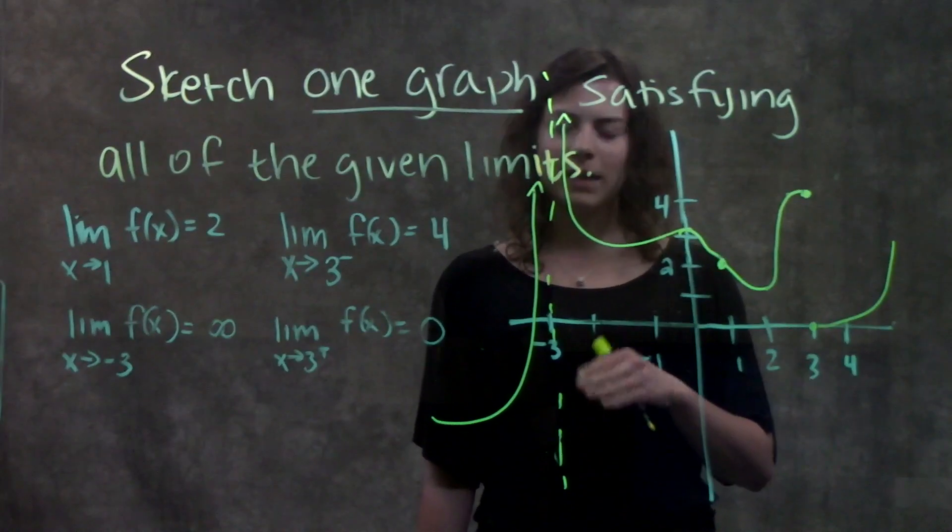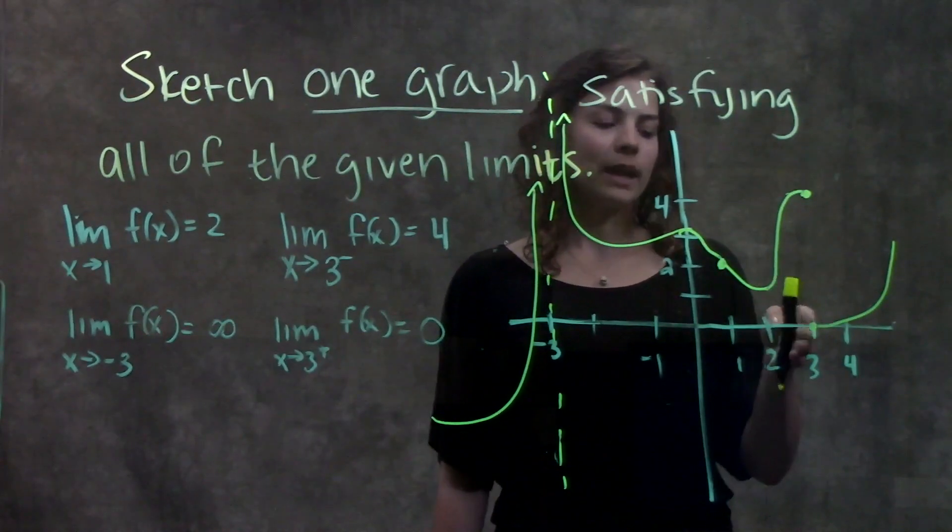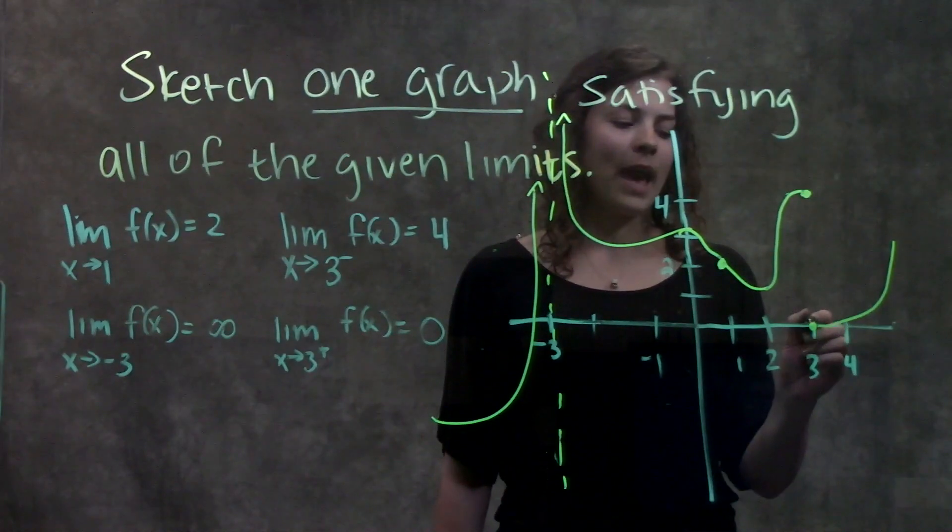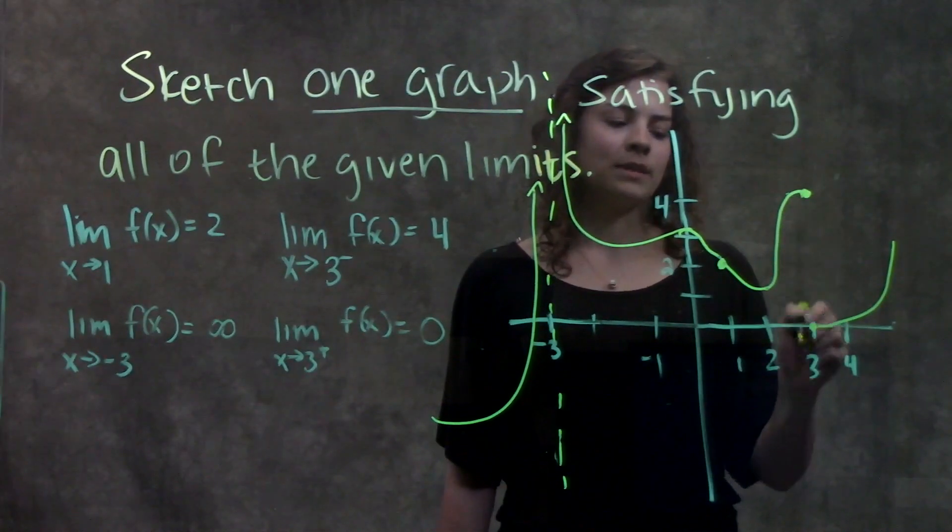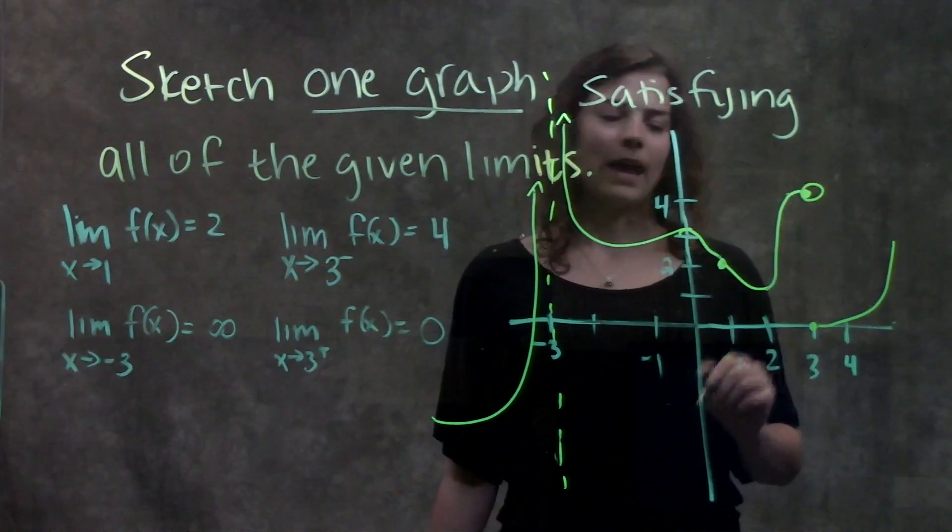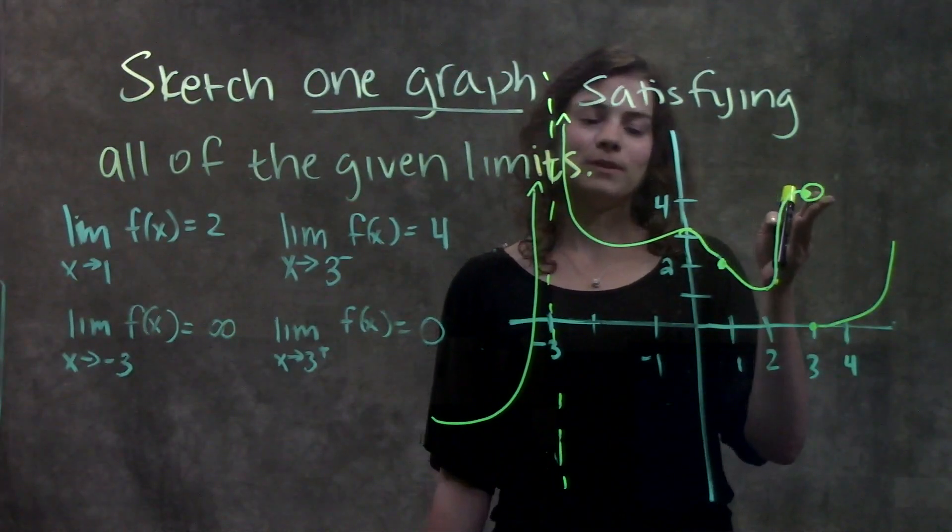I drew out all of my limits, but there's still one more step because what I have here makes this function not valid. Right now, I have two different y values at one x value. I need to fix this. The way you fix that is just add an open circle.